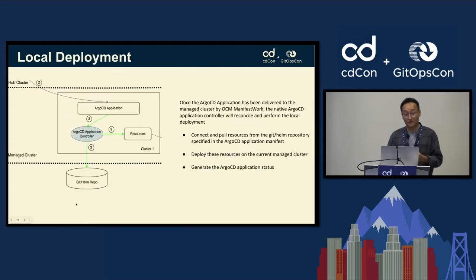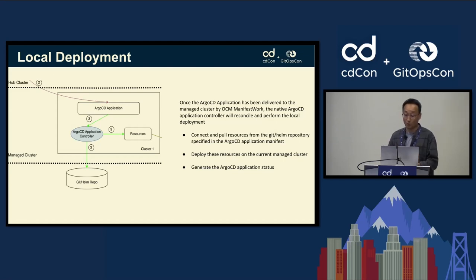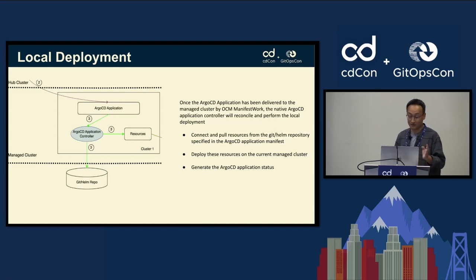Once the Argo CD application is deployed to a given managed cluster, the next step is entirely owned by the native Argo CD application controller. We just deliver the Argo CD application template to the managed cluster, then the Argo CD application controller reconciles to pull resources from the Git repo and Helm repo and performs all local deployments — just on that managed cluster.